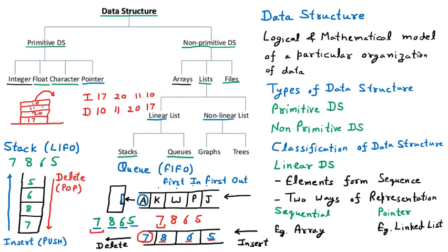The person who put the assignment first — roll number 17 — gets their turn last. Such type of ordering is called the stack, or LIFO, because the person last in the sequence is given the first preference. So all the plates in your kitchen, all the books on the library shelf, and all the assignments on the faculty's table are examples of the stack.